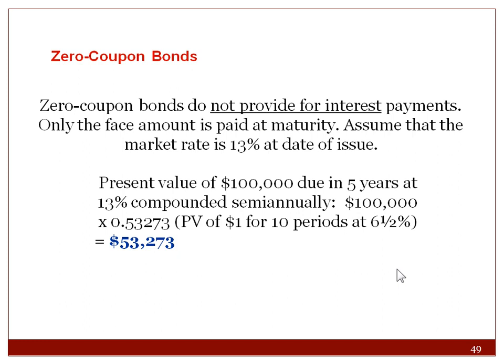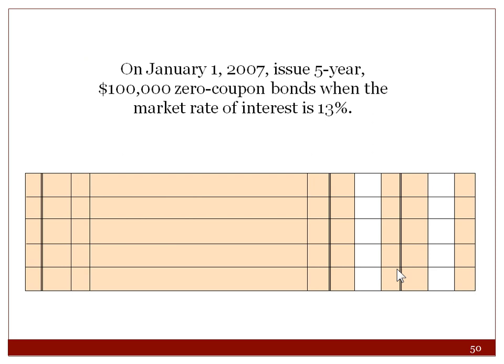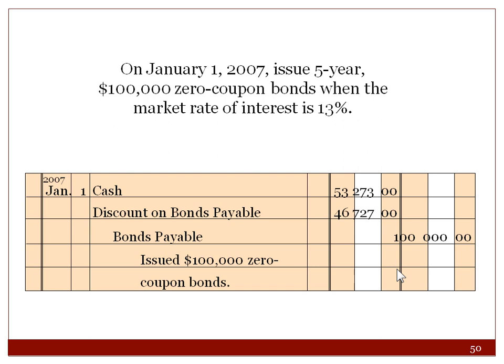Zero coupon bonds don't provide for periodic interest payments — only the face amount is paid at maturity. Assuming a market rate of 13%, the present value of $100,000 due in five years compounded semi-annually is $53,273. You still book the discount: debit Cash $53,273, debit Discount on Bonds Payable, credit Bonds Payable $100,000. Even zero coupon bonds require calculating the present value and imputing the discount or premium.